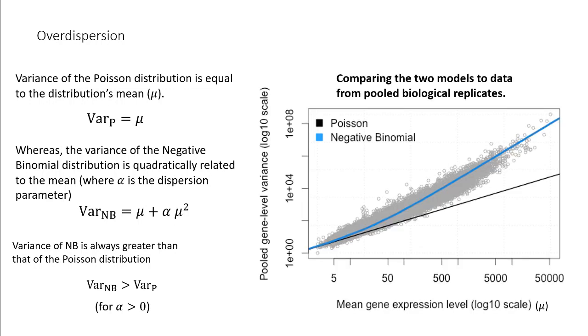If we were to compare the two models to actual data, we can see how the Poisson model underestimates the variance for all values of mean expression level, whereas the negative binomial model accurately captures the trend in the variance. For most DEA tools, a lot of effort is put into computing the appropriate value for the dispersion parameter alpha. This negative binomial model undergirds many of the common DEA tools including the ones we will be using later, namely DESeq2.